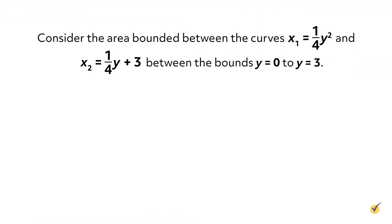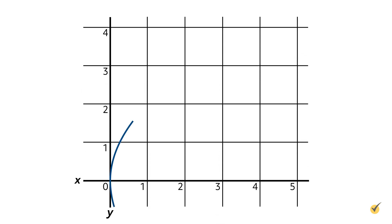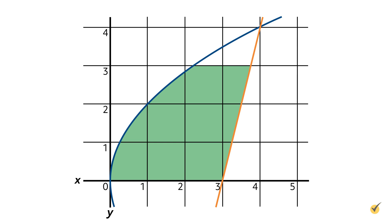Let's work through one more example. Consider the area bounded between the curves x₁ equals one-fourth y² and x₂ equals one-fourth y plus 3, between the bounds y equals 0 to y equals 3. A three-dimensional shape whose footprint is this area is shaped in such a way that its cross-section, when cut perpendicular to the y-axis, is an equilateral triangle whose base lies flat on the xy plane. Find the volume in units cubed of this shape. x₁ equals one-fourth y² is shaped like a sideways parabola, while x₂ equals one-fourth y plus 3 is an upward sloping straight line. The area between these curves from y equals 0 to y equals 3 is shaped somewhat like a shark fin.